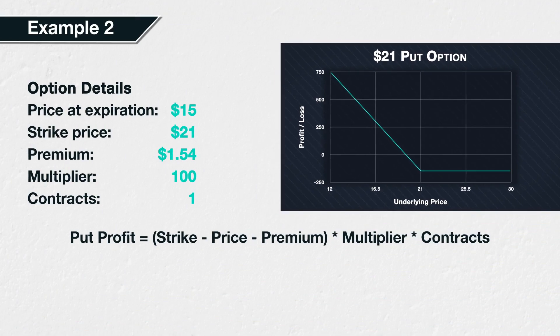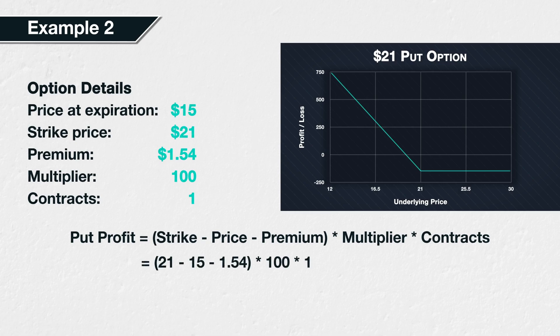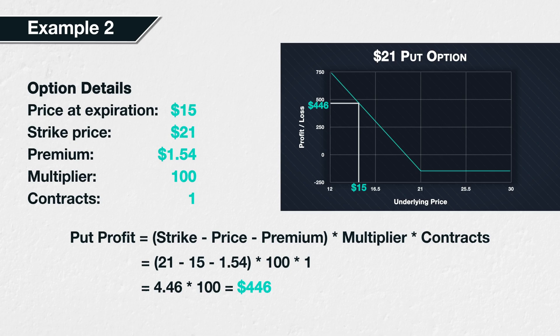Example 2. This time we've purchased the $21 SLV put option for $1.54. Let's assume that the price of SLV at expiration is $15. This means that we have a price at expiration of $15, a strike price of $21, a premium paid of $1.54, a contract multiplier of 100, and a number of contracts of 1. Now, substituting all these values into the formula, we get 21 minus 15 minus 1.54, all multiplied by 100, multiplied by 1. This gives us 4.46 multiplied by 100, or $446. That's $4.46 per share multiplied by 100 shares. This long put option position has therefore made a profit of $446.